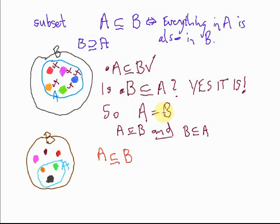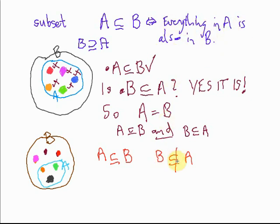Is B a subset of A? Is everything in B also in A? Well, those three things in B are in A, but there are three other things in B that are not in A — specifically the red ball, the brownie-bean-shaped one, and the purple ball. So B is not a subset of A, because there are things in B that are not in A.